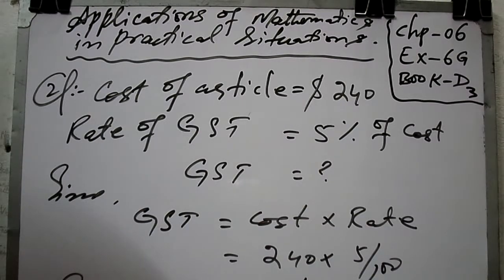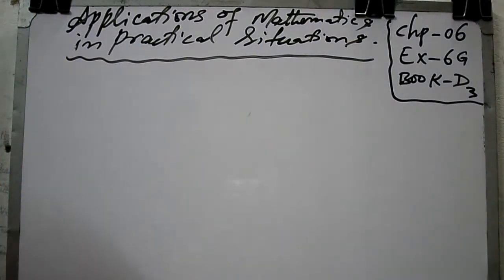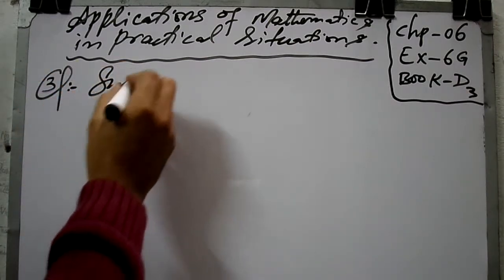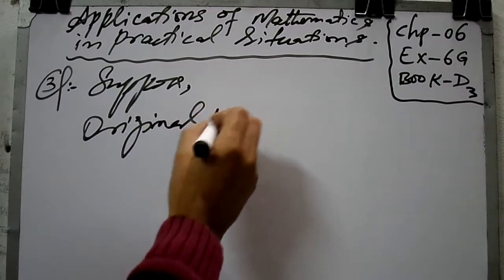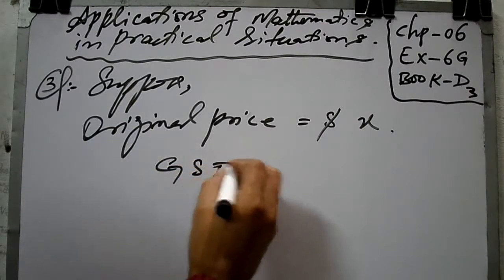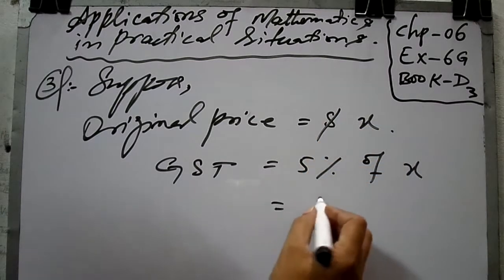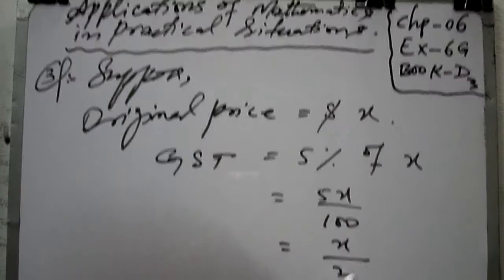Coming to question number three: an article is advertised for $169.95 inclusive of five percent GST. Find the original price. Suppose the original price is $X. Then GST on X = (5X/100), which after simplification gives X/20.